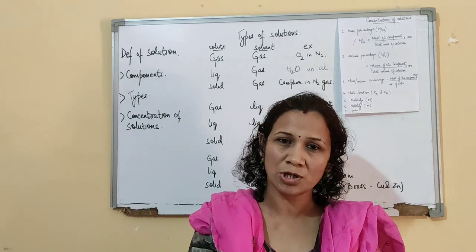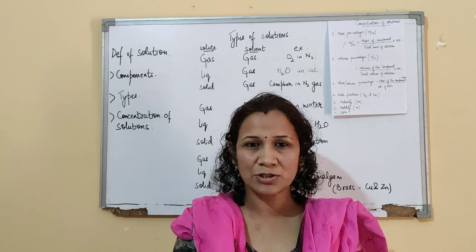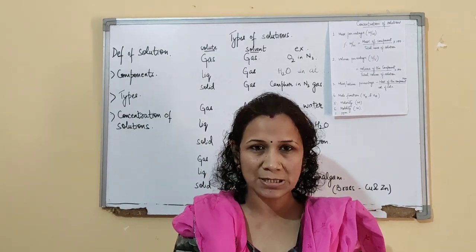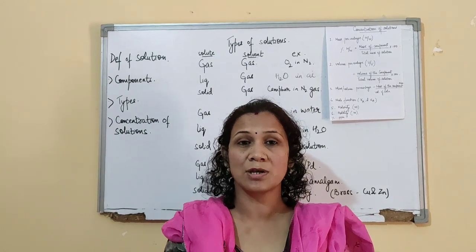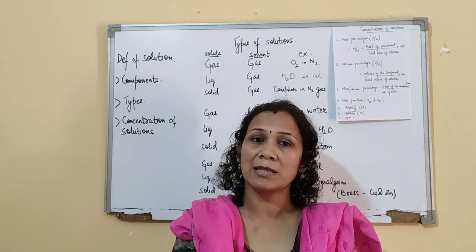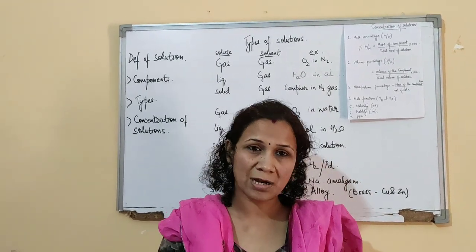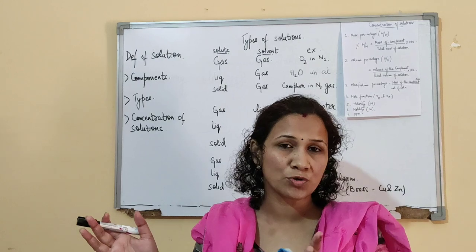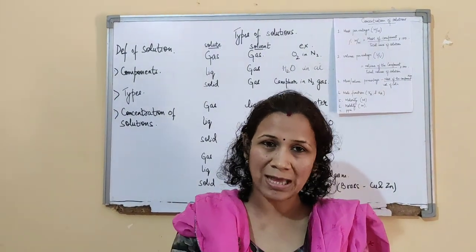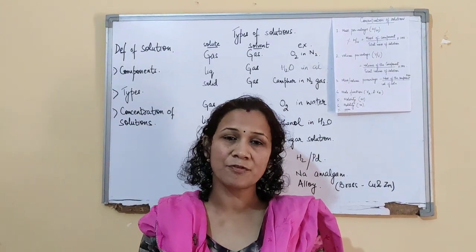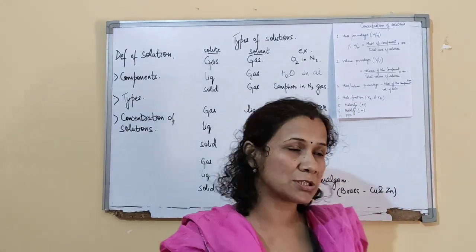That is chapter number 2 — Solutions. The first three chapters are numerical based chapters and will comprise the physical chemistry part. The second part, which is very important, is the organic chemistry part, which we will do in book number 2. So first we will start with numerical based, then move on to organic chemistry, and then to inorganic chemistry. There are 15 chapters in total in class 12, and we will first start with the solutions chapter.